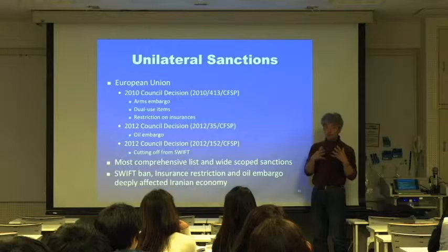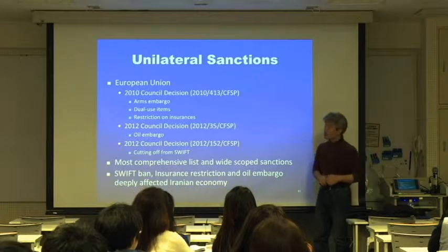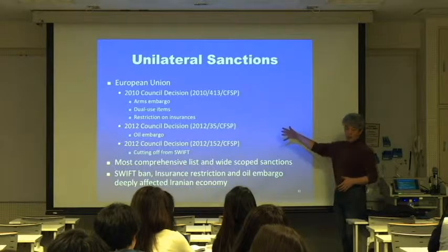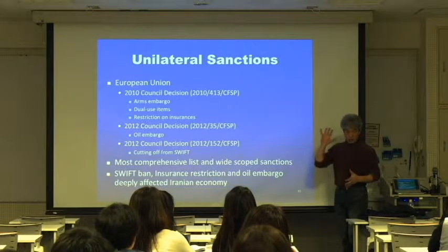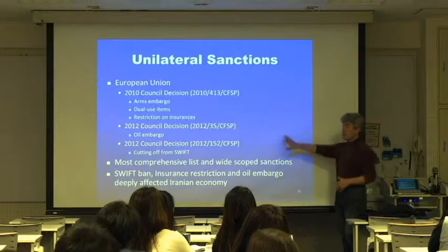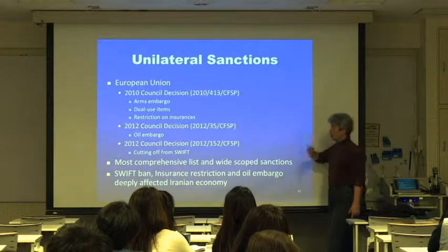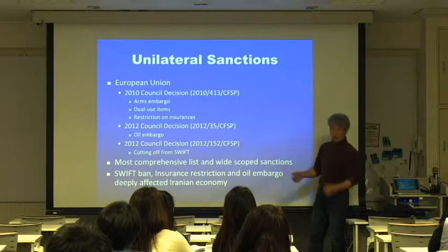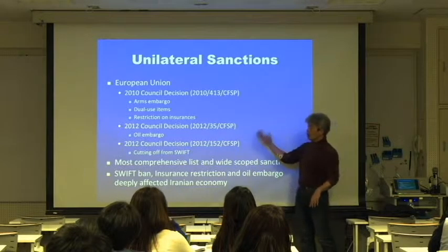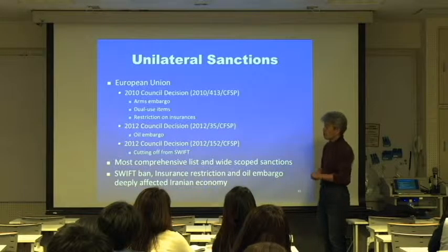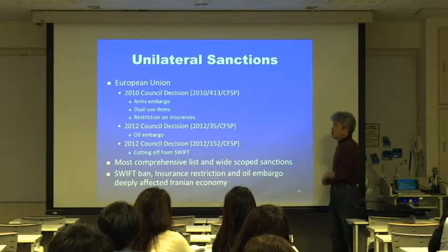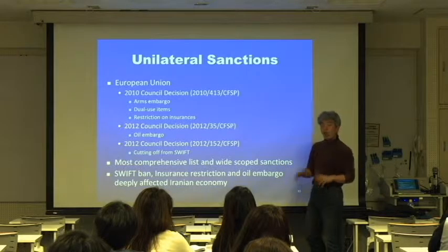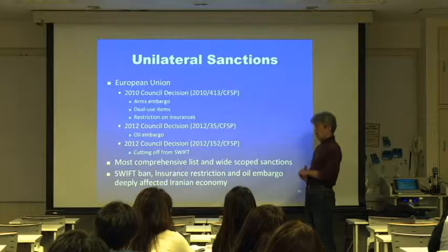In order to put pressure on Iran, we also need unilateral sanctions, which are put on Iran unilaterally by member states. There are two major examples here: the European Union unilateral sanctions and the United States unilateral sanctions, but also Japan, Australia, Canada, etc., put their own unilateral sanctions.